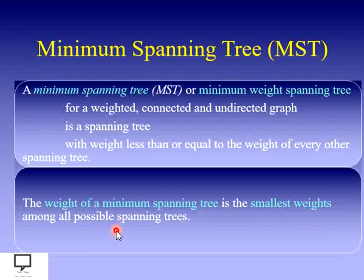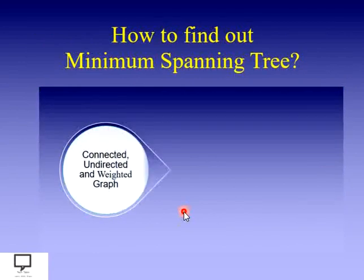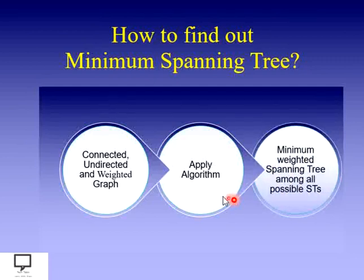If for a given graph we can find four different spanning trees, we find the weight of all spanning trees, and the one with the smallest weight is selected as the minimum spanning tree. To find a minimum spanning tree, we take as input a connected, undirected, and weighted graph, then apply an algorithm whose output will be the minimum spanning tree from all possible spanning trees.